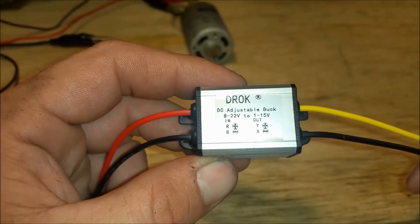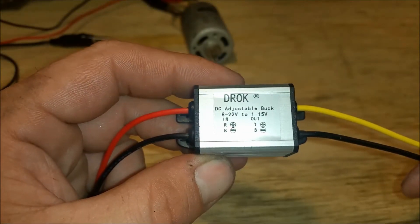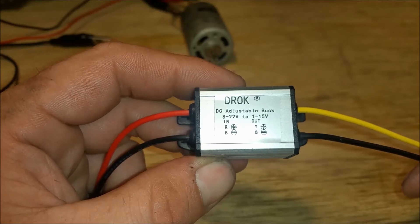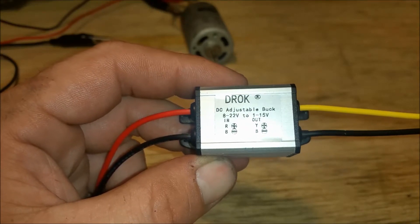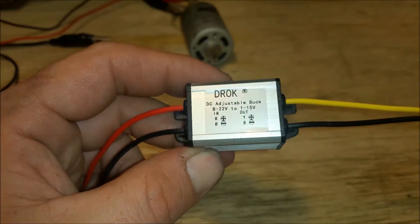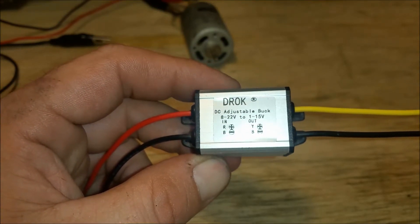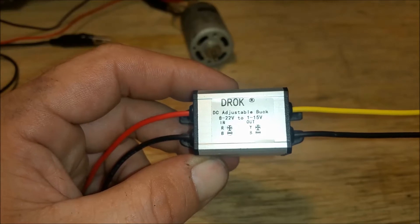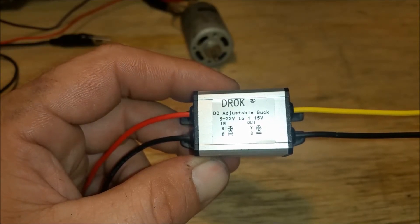Hello YouTube. Today we're going to demonstrate a DRock DC adjustable buck. It's not a transformer, but it's a circuitry designed to convert 8 to 22 volts DC to 1 to 15 volts DC.